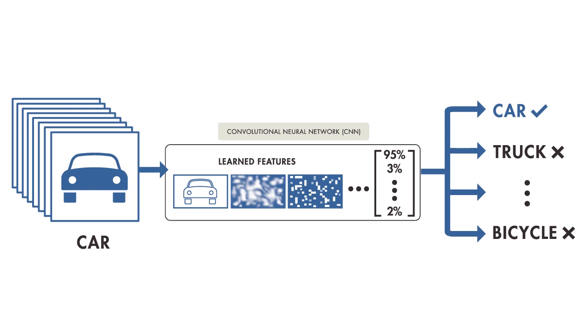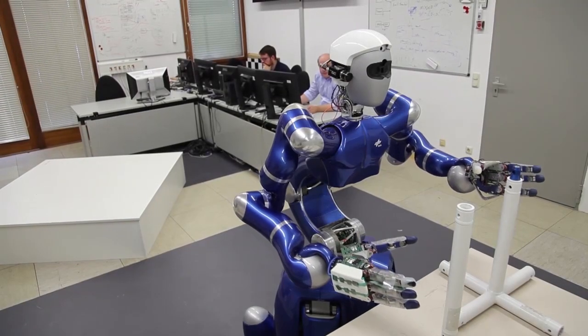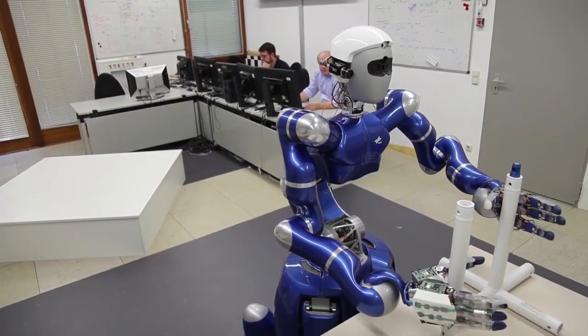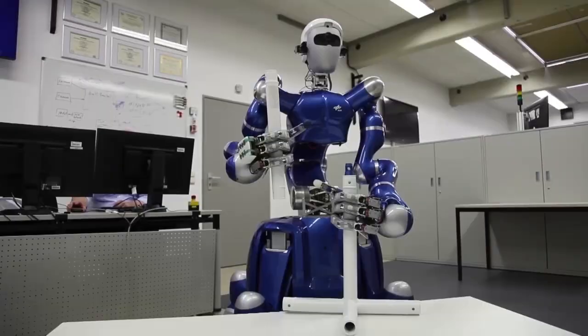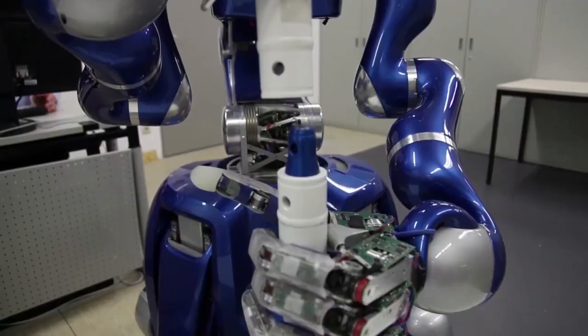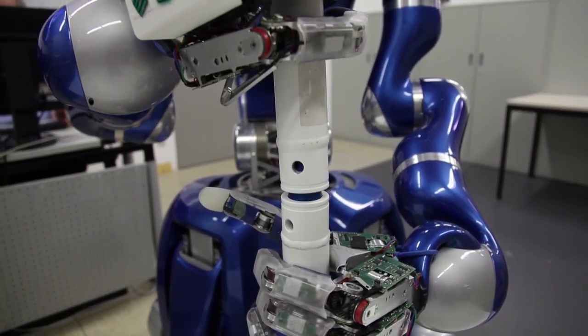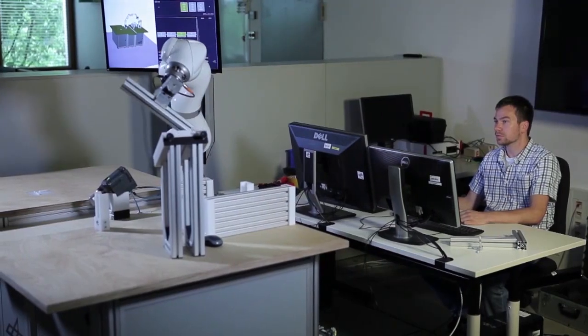We use the term end-to-end learning because the task is learned directly from data. Another example is a robot learning how to control the movement of its arm to pick up a specific object. In this case, the task being learned is how to pick up an object given an input image.